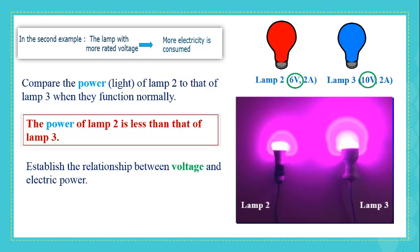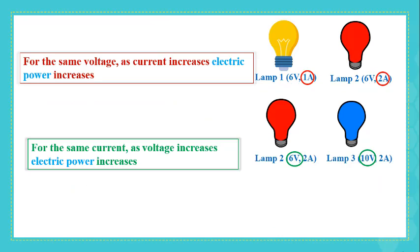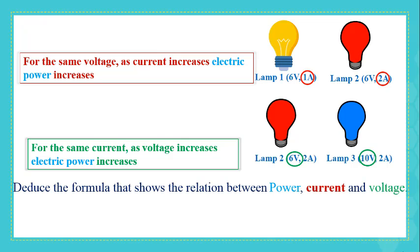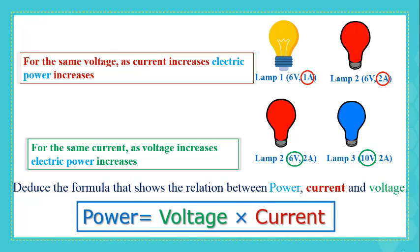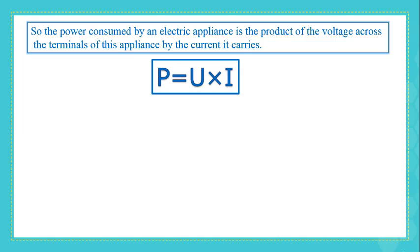Let's establish a relationship between voltage and electric power. For the same current, as voltage increases, electric power increases. By referring to these two relationships, we can deduce the formula relating power, current, and voltage. Voltage and power are directly proportional, and current and power are directly proportional. So, to calculate power, we multiply voltage by current. The power consumed by an electric appliance is the product of the voltage across its terminals by the current it carries. The formula is: P = U × I.